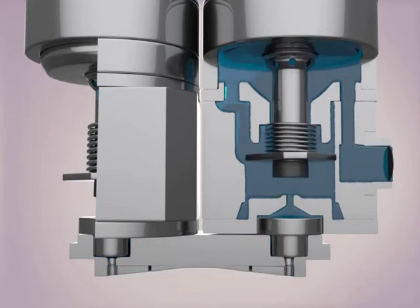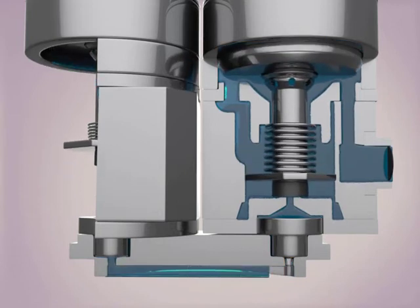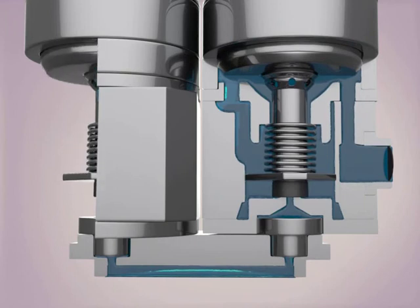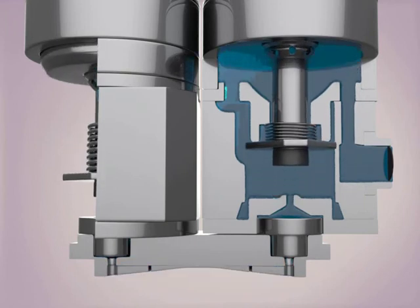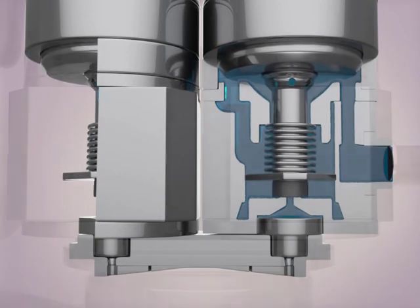These valves function without the need of a motor, reducing the number of moving parts inside of the Prometria-2. Having less moving parts leads to a long battery life of 10 plus years.